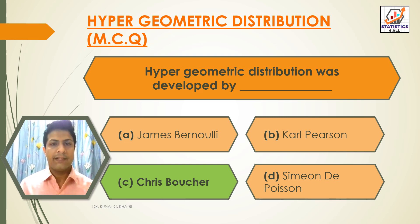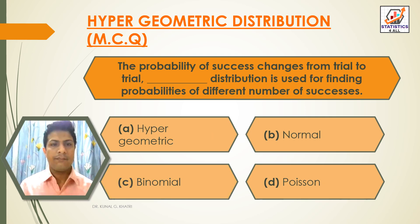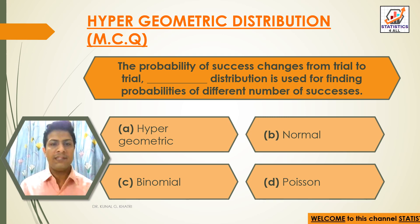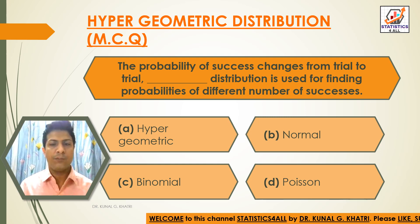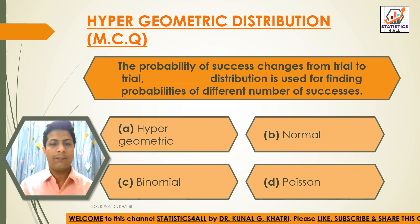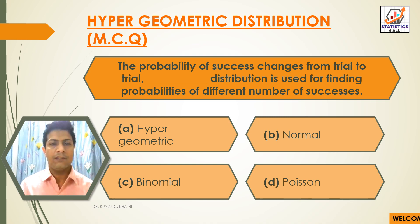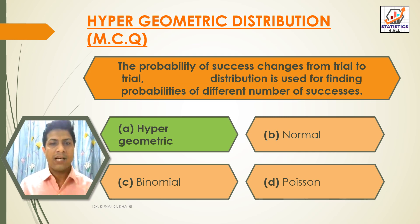Next question: The probability of success changes from trial to trial — which distribution is used for finding probabilities of different number of successes? Option A: Hypergeometric, Option B: Normal, Option C: Binomial, Option D: Poisson. The answer is Option A — Hypergeometric distribution. When the probability of success changes from trial to trial, Hypergeometric distribution is used.